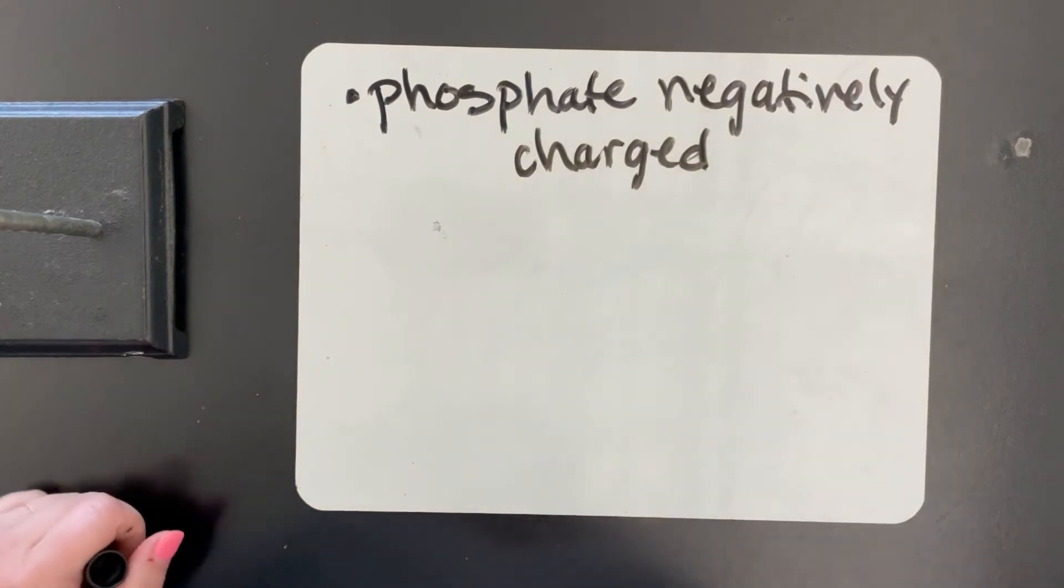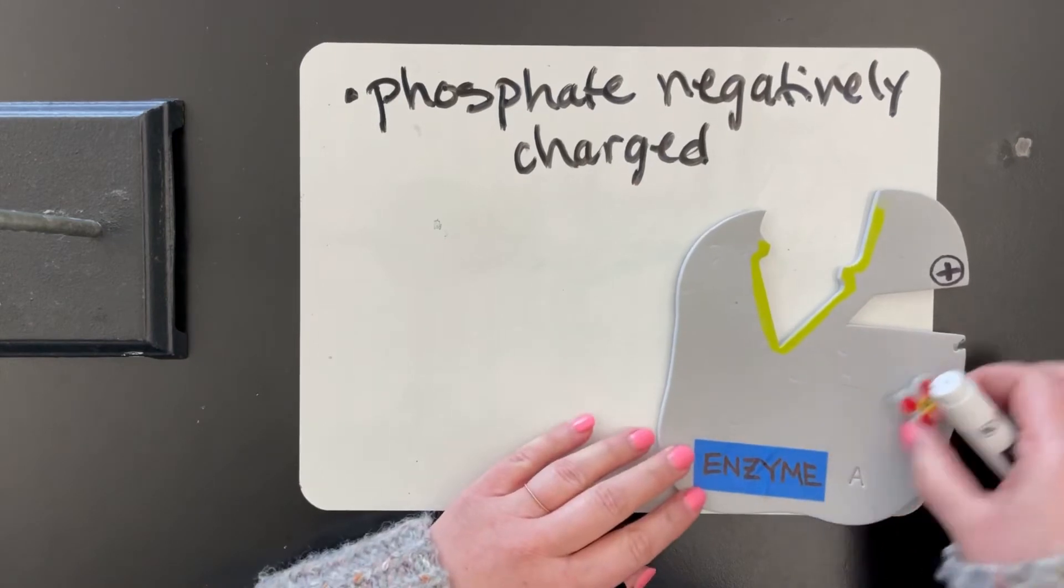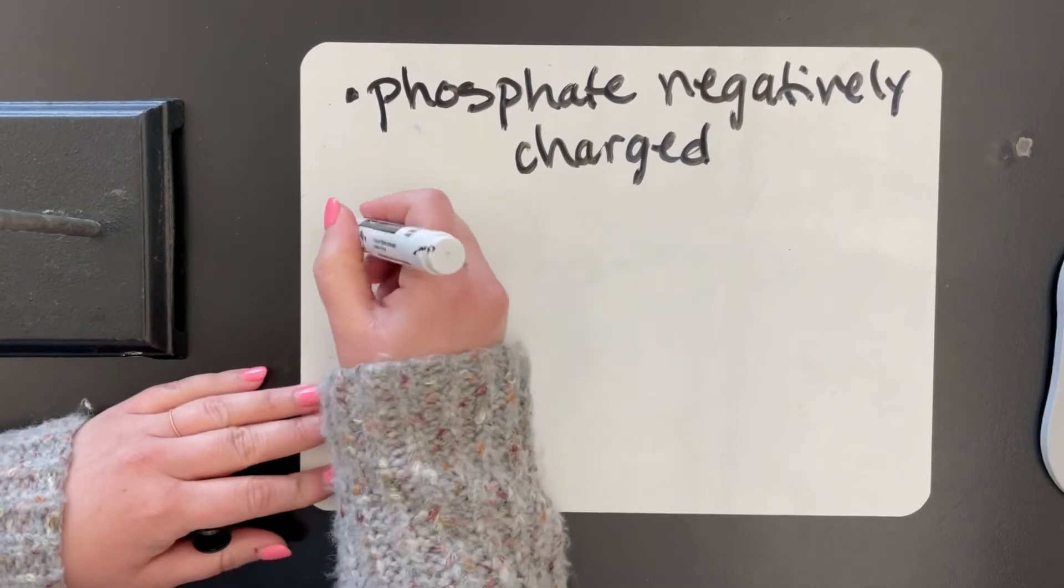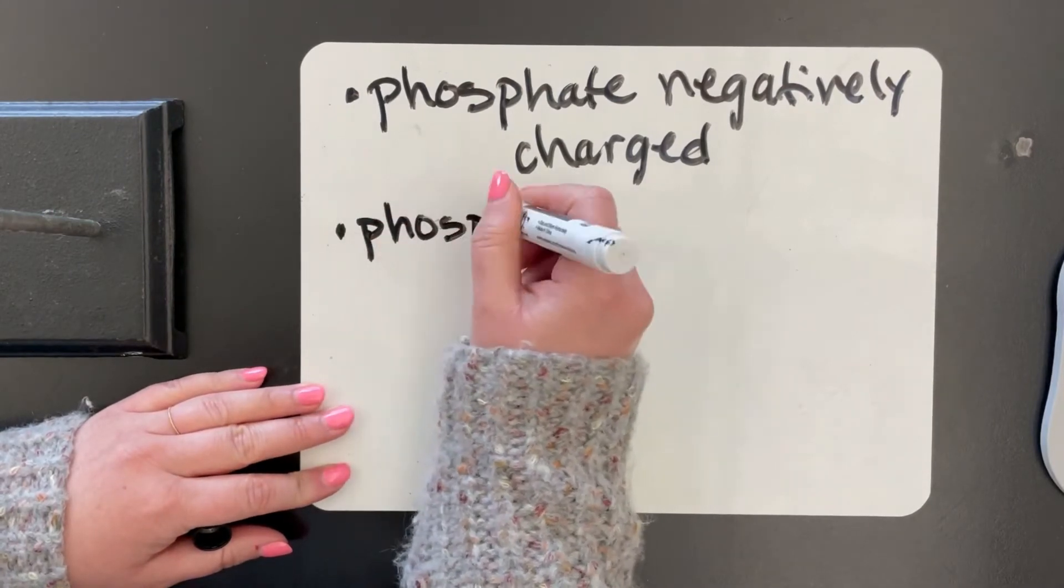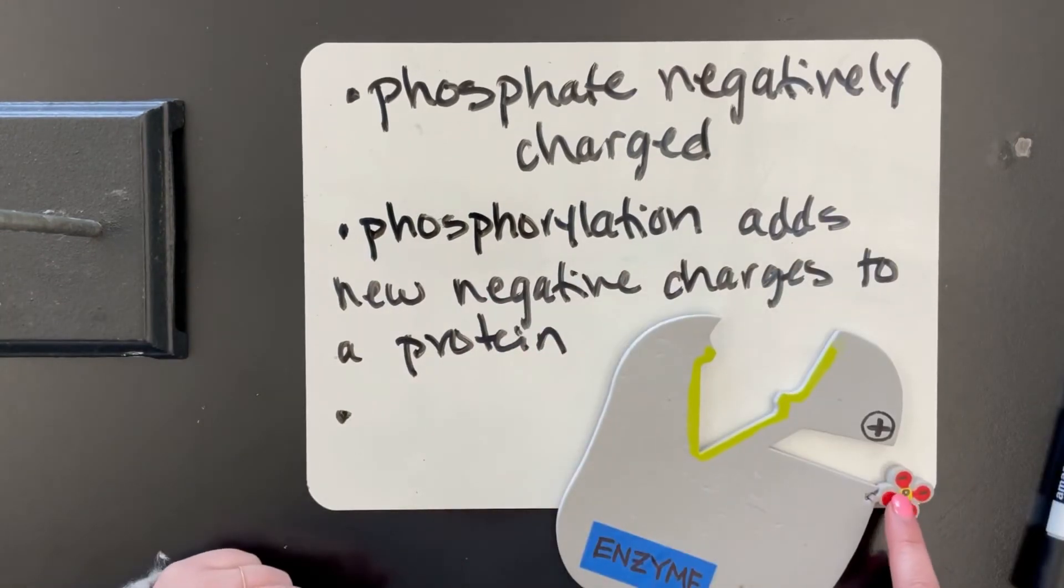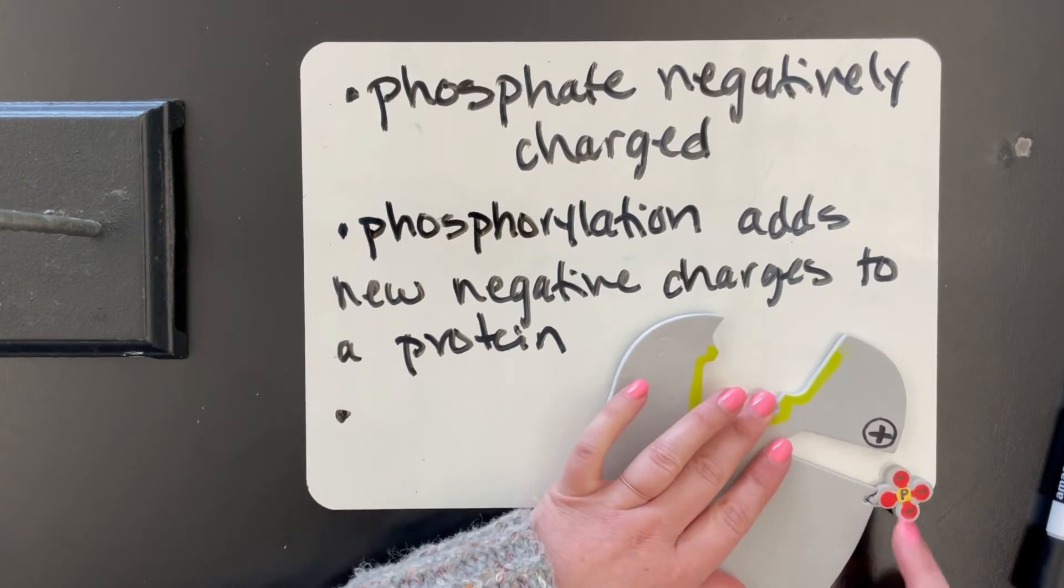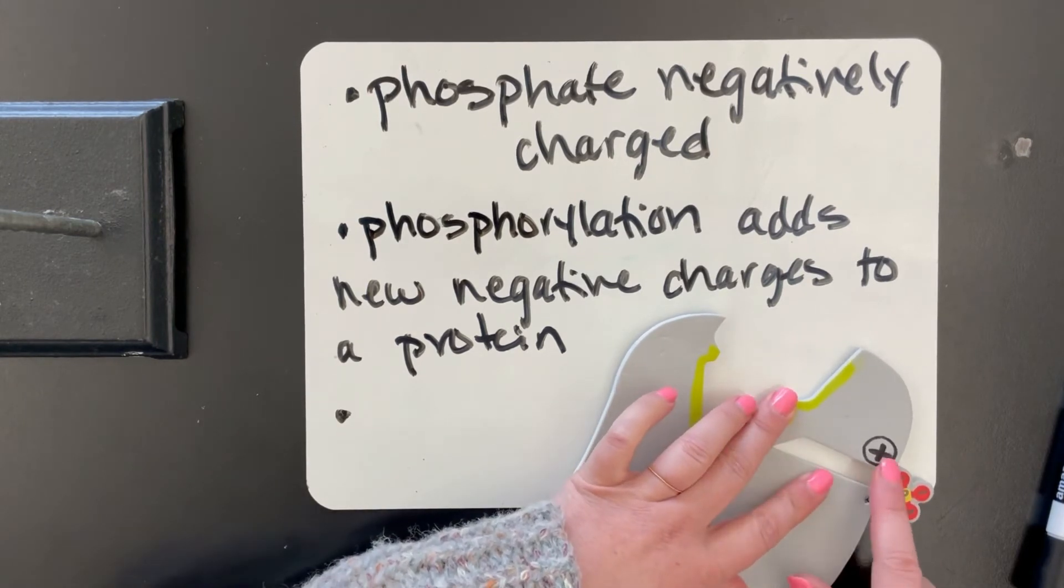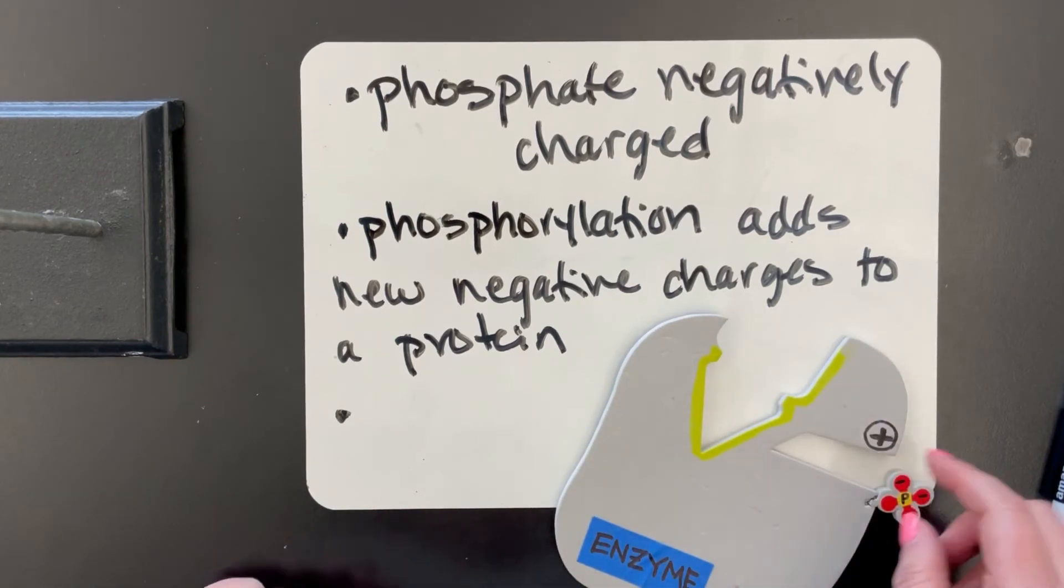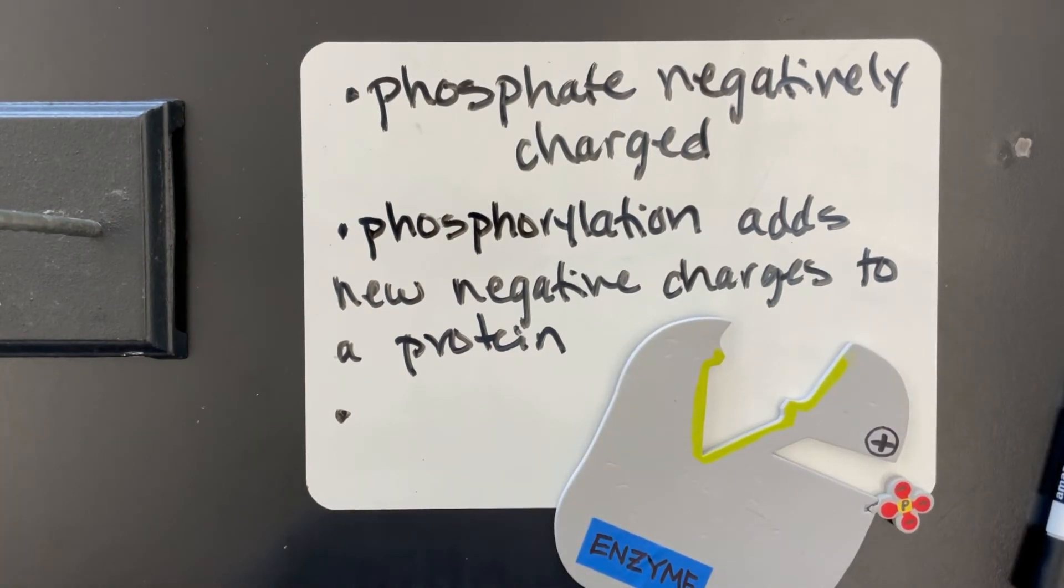So once a protein is phosphorylated, that means it's going to add new negative charges onto the protein. And so now because we have these new negative charges, that's going to change the types of interactions that the protein can have with itself. In this example, we can have a new ionic bond form. That is going to change how the protein is folded, which changes its three-dimensional shape, which is going to change its function, change how it works.